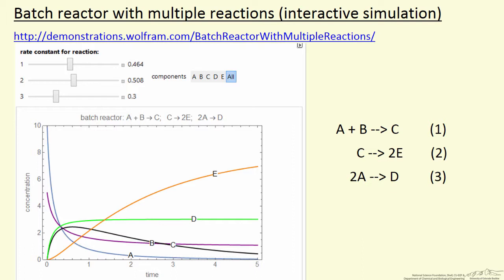And what the simulation allows us to do, by moving these sliders, we can change the rate constant. So one is for the first reaction, two for the second, three for the third.